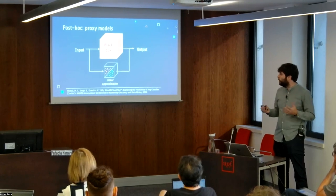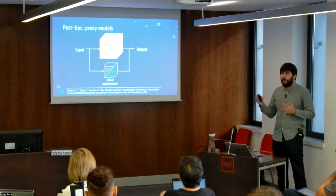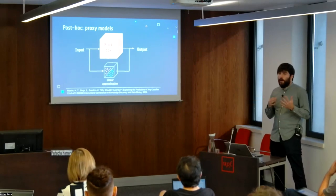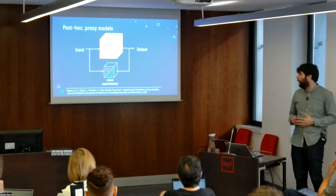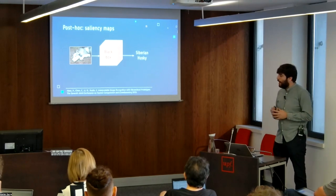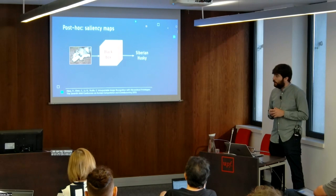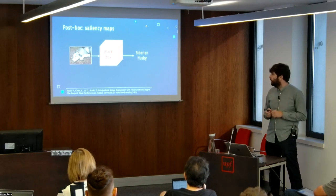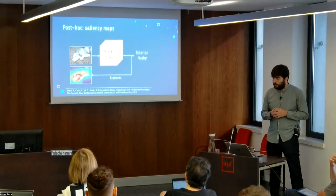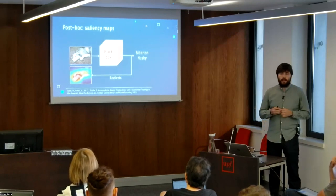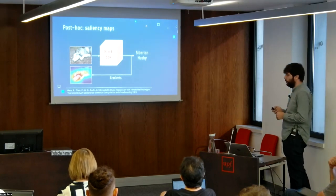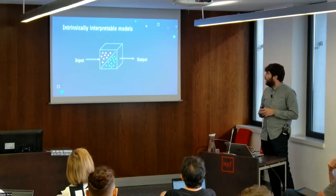Some post-hoc methods try to explain the input-output behavior of a black box model, for instance by training a proxy linear model that imitates the behavior of the original model but is easier to interpret. However, since the proxy model is typically a local linear approximation of a very complex non-linear model, it can fall short in providing a reliable explanation. Besides, some visualization methods highlight the input characteristics that strongly influence the output — among the most common ones are saliency maps, which use gradients to identify input features that strongly influence the output. They can be helpful to get importance values, but not to disclose how this information is being used within the model, and they can also produce unreliable explanations.